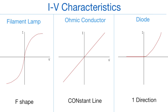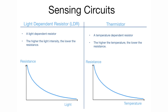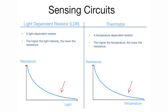The first IV characteristic is for the filament lamp, which produces a graph that is kind of in an S-shape. The next one is an ohmic conductor, which is just a constant straight line, and the final one is a diode — a diode only lets current flow in one direction. It is also important to understand how resistance changes for both an LDR and a thermistor. When both the light intensity and the temperature are lower, the resistance is quite high, but as they both increase, the resistance flattens out and asymptotes to zero.